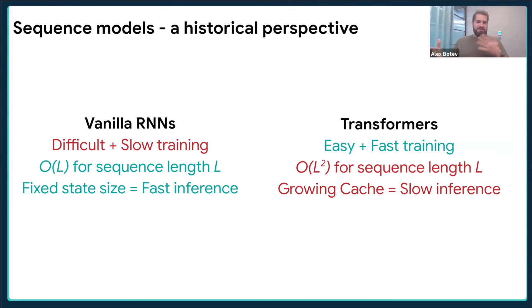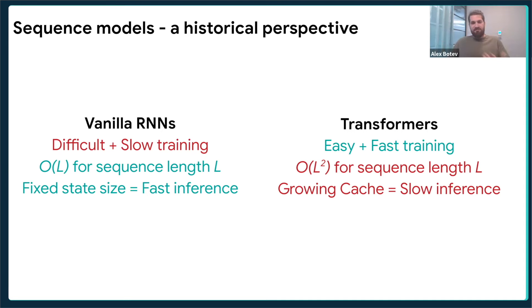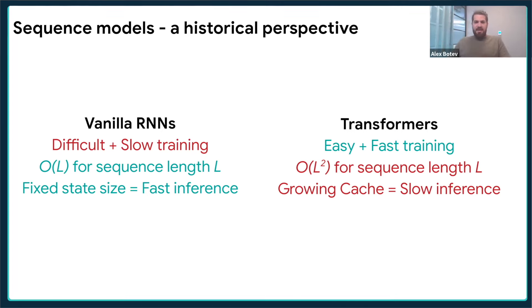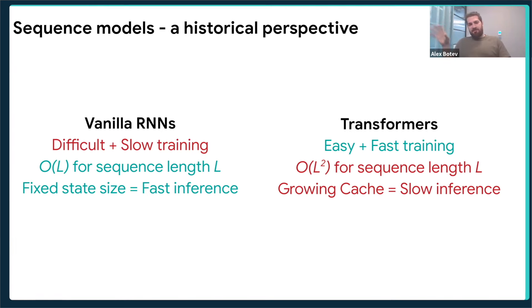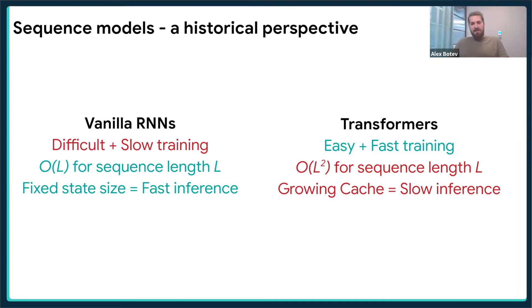In RNNs, things like LSTMs and GRUs address some of the slow training issues — specifically vanishing gradients in vanilla RNNs — but they still remain sequential. Transformers, on the other hand, are very fast to train, and now we have optimizers that train them very well as well.